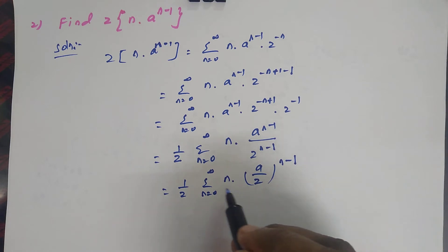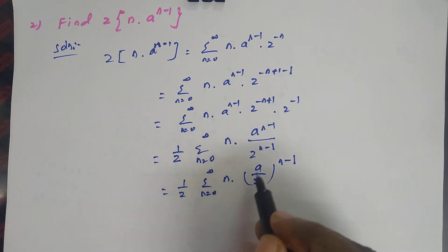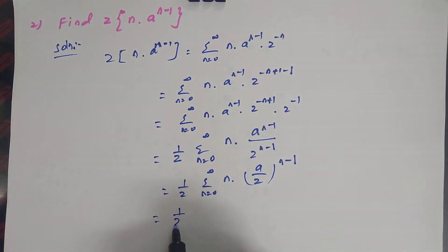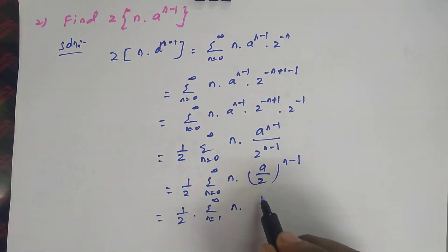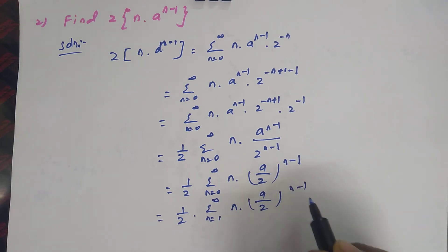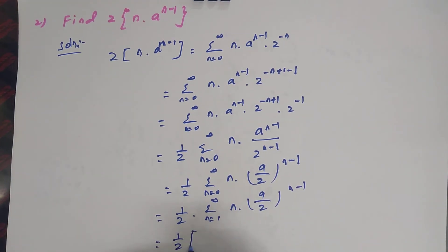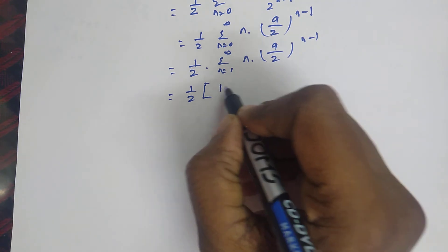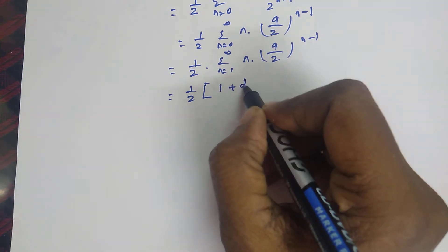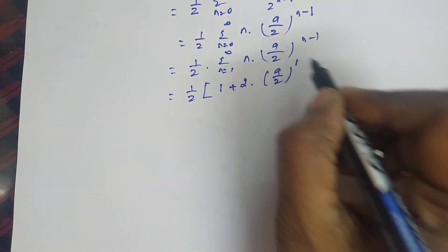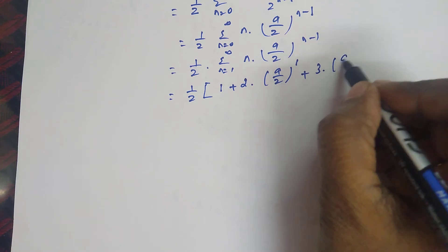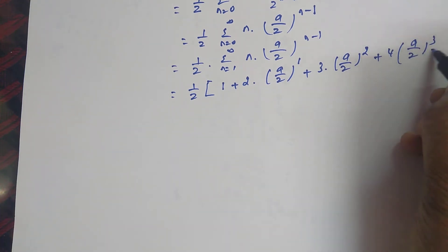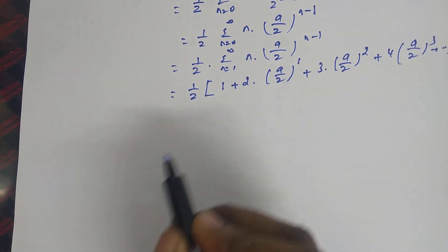Now we give values for n. As usual, when n equals 0, the whole term becomes 0, so we start from n equal to 1. For n=1: 1 into a/Z power 0 equals 1. For n=2: 2 into a/Z power 1. For n=3: 3 into a/Z squared. For n=4: 4 into a/Z cubed, and so on. So we have 1/Z into 1 plus 2·a/Z plus 3·a/Z squared plus etc.